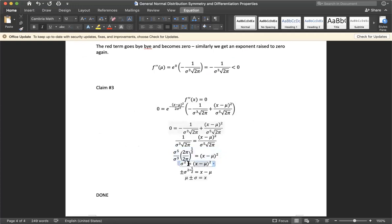We get sigma squared equals x minus mu quantity squared. When we take the square root, we have to be careful to preserve both the positive and negative roots. Solving, you get x equals mu plus or minus sigma respectively. We are done with the algebraic and differential calculus properties of the Gaussian distribution.